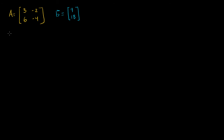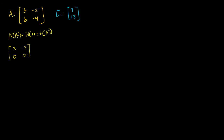To figure out the null space of A, we know that the null space of A is equal to the null space of the reduced row echelon form of A. So let's find the reduced row echelon form of A. We leave the first row the same — we get 3, minus 2 — and replace the second row with the second row minus 2 times the first. So 6 minus 2 times 3 is 0, and minus 4 minus 2 times minus 1 is 0. Then we replace the first row with the first row divided by 3, giving us 1, minus 2/3, and the second row is still 0.